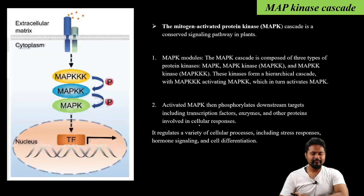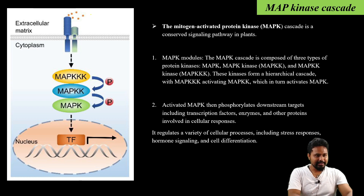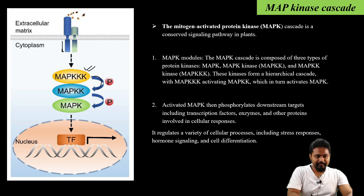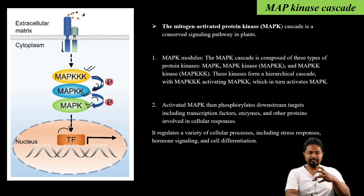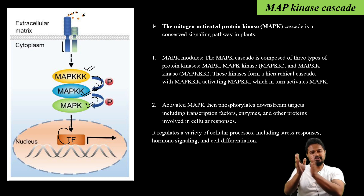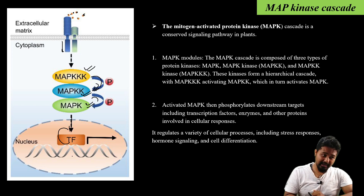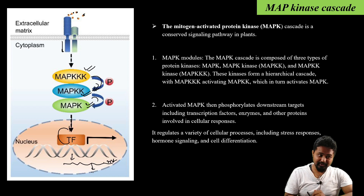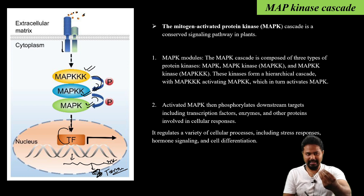Looking at Figure 2 — it is very simple. There is an extracellular signal in the cytoplasm. MAPK is phosphorylated and activated. This activated MAPK then phosphorylates transcription factors, which enter the nucleus, where genes are activated. Transcription of mRNA occurs, leading to translation and production of enzymes and proteins from the cell.